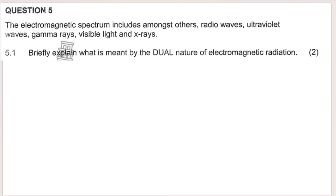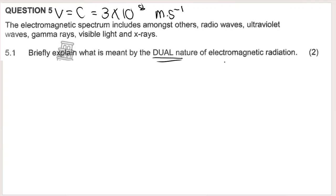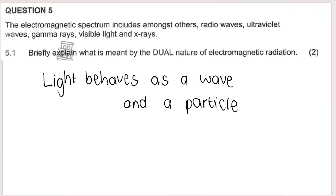Question 5 is about electromagnetic waves. They travel through a vacuum all at the same speed — the speed of light: 3×10⁸ m/s. The first question asks to briefly explain the dual nature of electromagnetic radiation. Dual nature means it acts in two ways: light behaves both as a wave and as a particle.